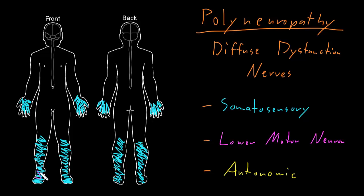Lower motor neuron abnormalities usually appear in the same pattern and distribution. We call this the distal symmetric — or symmetric distal — pattern. It's about the same on the right and the left side, and it's the distal, or distant, parts of the limbs that are affected first or most severely.